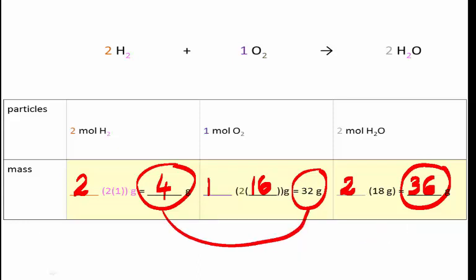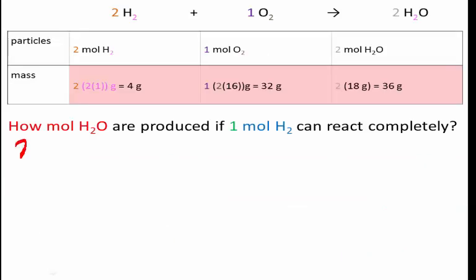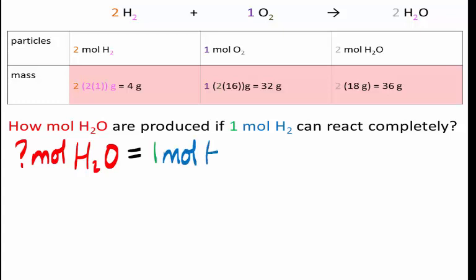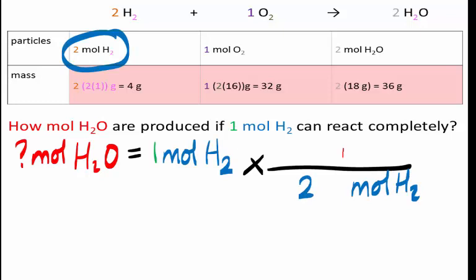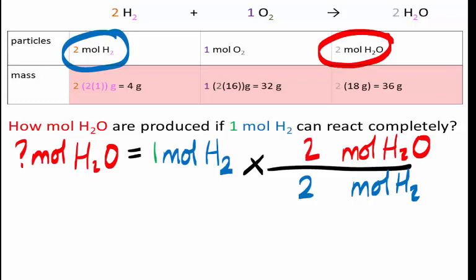We use these ratios to answer: how many moles of water are produced if 1 mole of hydrogen reacts completely? We multiply by a conversion factor from the reacting ratio, with moles of hydrogen at the bottom and moles of water at the top. From the equation, both coefficients are 2, so they react in a 1-to-1 ratio. If 1 mole of hydrogen reacts completely, it will produce 1 mole of water — which is what we said previously as well.